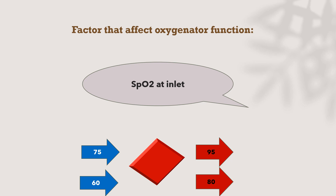The second factor is oxygen saturation at the inlet of the oxygenator. Using the same ECMO flow, same FiO2 from the ECMO side, and hemoglobin concentration of 12 g/dL in both cases: if the inlet saturation is 75%, the blood will come out at 95% at the rated flow. But if the inlet saturation is 60%, the blood coming out of the oxygenator will be 80%, and the patient will be hypoxic.